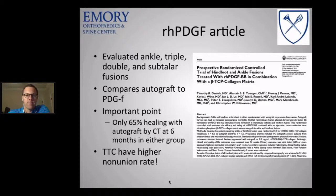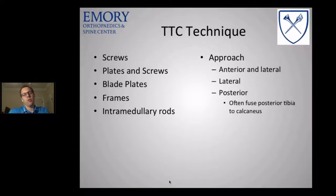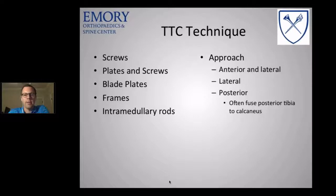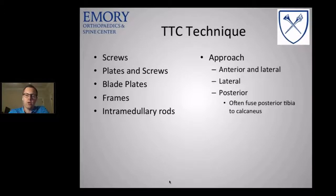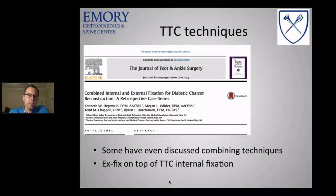When thinking about TTC fusion techniques, people discuss screws, plates and screws, blade plates, and frames. Frames are a really good option but have associated problems — pin tract infections and compliance issues. I personally try to use intramedullary rods whenever I can. Approach options include anterior and combined lateral, transfibular lateral, or posterior. There's a good article from Duke on a fibular splitting approach. I sometimes try to get the posterior tibia to fuse to the calcaneus instead of using bulk allograft.